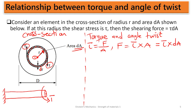Torsion is a moment — it is that moment which is causing the bar to twist about a particular axis. A moment is just force multiplied by the perpendicular distance. Using the same approach, if torsion is a moment, then when we consider this small area we consider a small moment dM. That small moment equals the shear force (which is τ·dA) multiplied by the perpendicular distance, which here is the radius r.